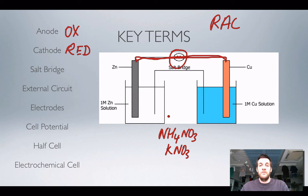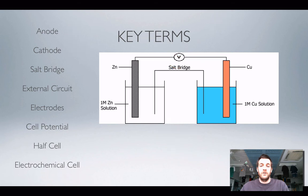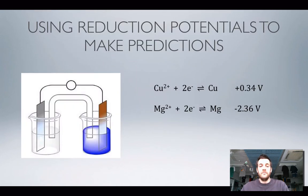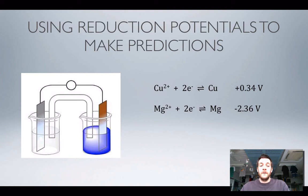It's important to be able to refer to these components and decide which way electrons are flowing and where reduction is happening. Using reduction potentials to make predictions about a cell, we can discuss the direction electrons flow in the external circuit, the direction ions flow in the salt bridge, which electrode is positive and which is negative, which is the anode and which is the cathode, and where reduction and oxidation are taking place.